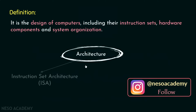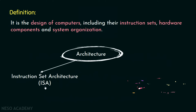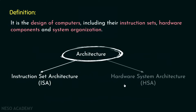Now it has got two parts. First, the instruction set architecture, which includes the specification that determines how machine language programs will interact with the computer. Next we have the hardware system architecture, which deals with the computer's major hardware subsystems like CPU, storage, input-output, etc. It includes both the logical design and the data flow organization of the subsystems, and hence determines the efficiency.